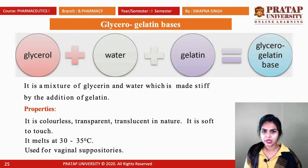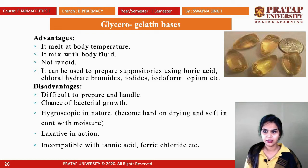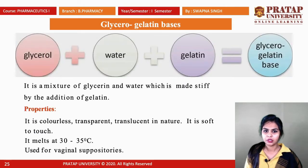Glycero-gelatin bases are mostly used for the preparation of vaginal suppositories. Advantages include: it melts at body temperature and mixes with body fluid, it is not rancid, and it can be used to prepare suppositories using boric acids, chloral hydrate, bromides, iodides, iodoform, opium, etc. Disadvantages: they are very difficult to prepare and handle because of their soft nature, and there are chances of bacterial growth because water is present.